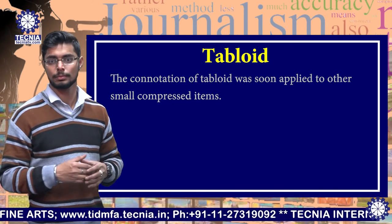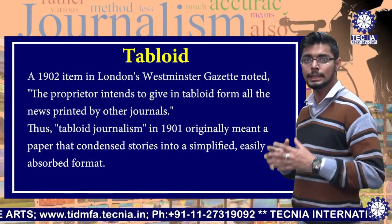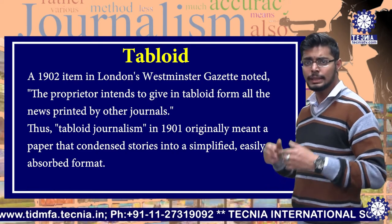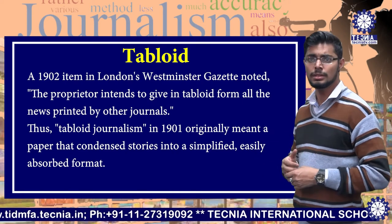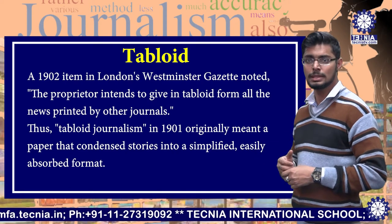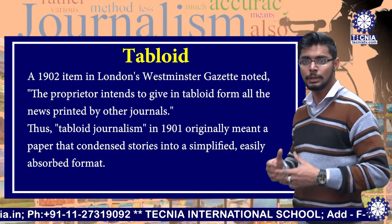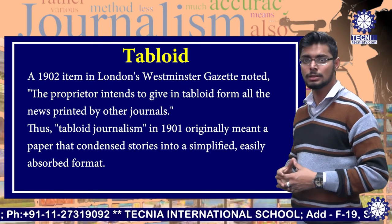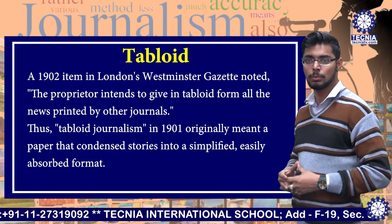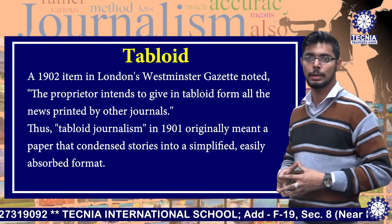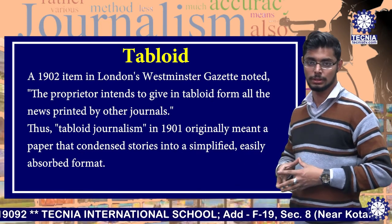The connotation of tabloid was soon applied to other smaller items. In 1902, the Westminster Gazette noted that it intended to give in tabloid form all the news printed by other journals.